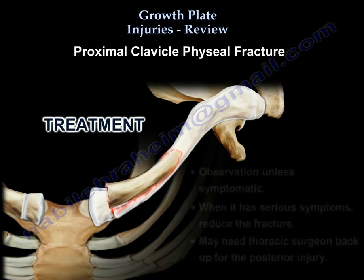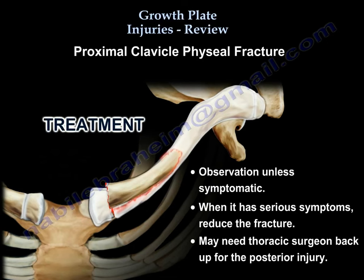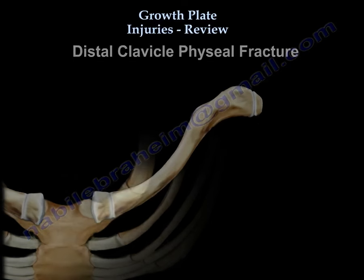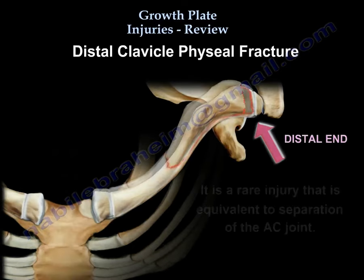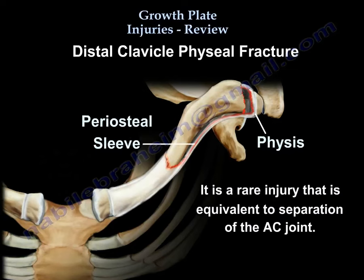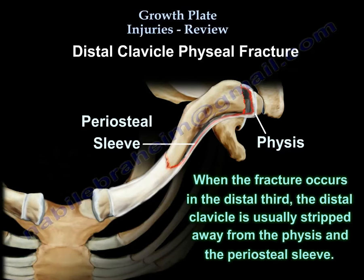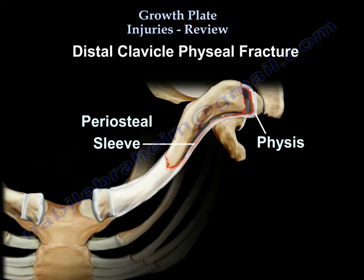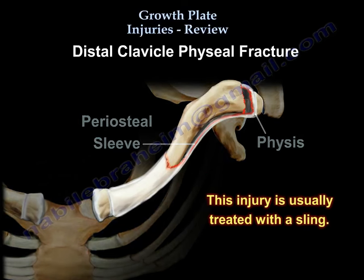Treatment is observation if less symptomatic; you may reduce the fracture and may need thoracic surgeon backup for posterior injury. The distal clavicle physeal injury is rare — it is equivalent to an AC separation and looks like one but really isn't. When the fracture occurs in the distal third, the distal clavicle is usually stripped away from the physis and the periosteal sleeve, called a sleeve fracture. This injury is usually treated with a sling.